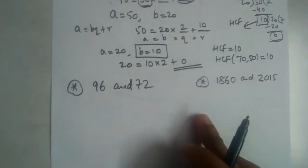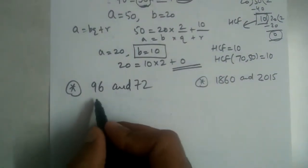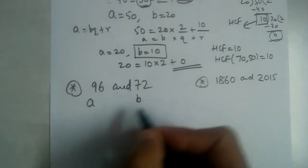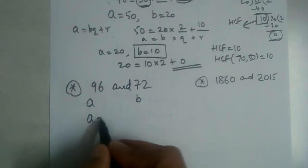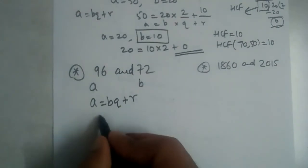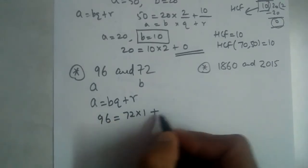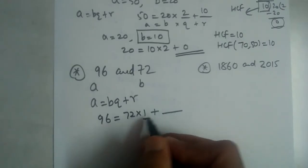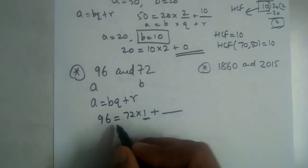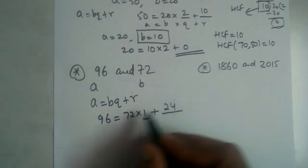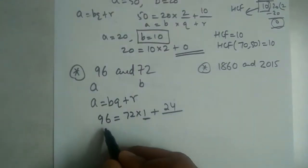We have two more problems. For 96 and 72: a is 96 and b is 72. Write in the form a = bq + r: 96 is equal to 72 into 1 plus 24. Seventy-two ones are 72, and 72 twos would be 144 which is greater than 96, so quotient is 1 and remainder is 24.